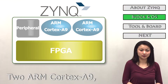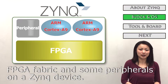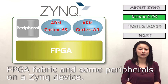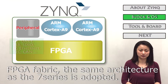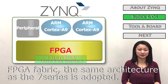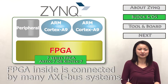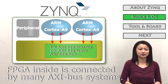Two ARM Cortex-A9 cores, FPGA fabric, and Zynq peripherals are on a Zynq device. For the FPGA fabric, the same architecture as the 7 Series is adopted. The FPGA inside is connected by many AXI-based interfaces.